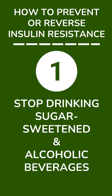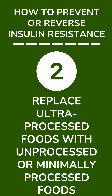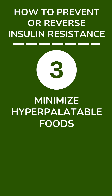First, stop drinking sugar-sweetened and alcoholic beverages. Second, replace ultra-processed foods with unprocessed or minimally processed foods as much as possible. Third, minimize your consumption of hyperpalatable foods consisting of fat and sugar, fat and salt, or refined grains and salt.